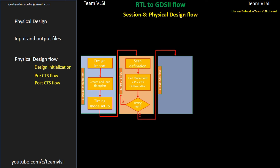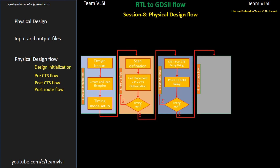If timing is met, we move to the next stage called the post-CTS flow. Inside the post-CTS flow, the first thing we do is clock tree synthesis. Then post-CTS setup fixing, where we fix setup timing. Then post-CTS hold fixing. After CTS, we do setup and hold fixing, then check the timing requirement. If timing doesn't meet, we repeat these steps until timing is met. Once timing is met, we move to the next stage: the post-route flow.